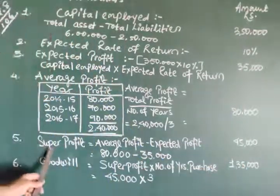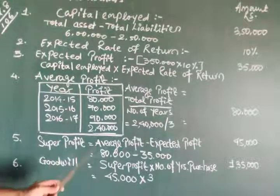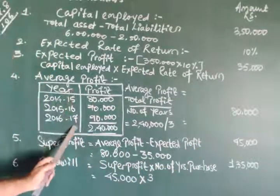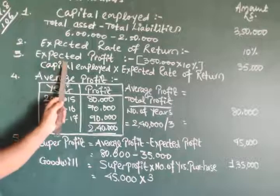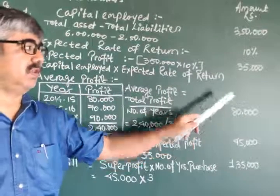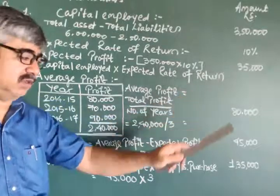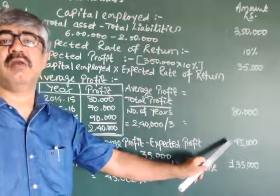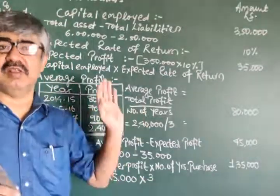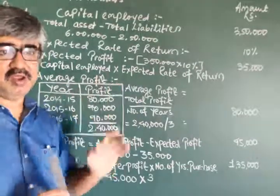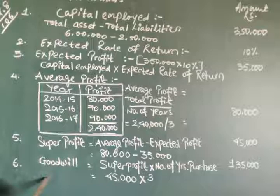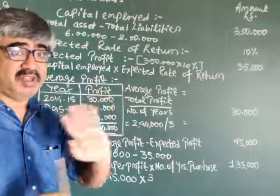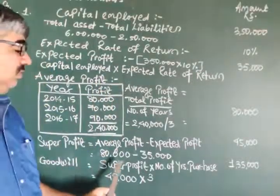Next, super profit. Super profit equals to average profit minus expected profit, fourth step minus third step. So 80,000 minus 35,000 comes to 45,000. As I say, the calculations are really easy in this particular method but you have to be perfect enough.